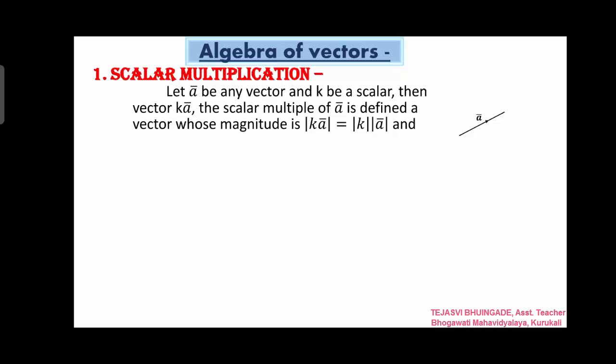Then kā — this magnitude: |kā| means |k| into |ā|. Vector ā and kā have the same direction if k > 0. Means ā and scalar k — when k is positive, these two vectors have the same direction. When k is positive, the result vector has the same direction as ā, so ā and kā are in the same direction if k greater than 0.